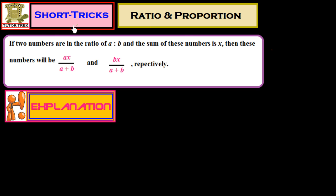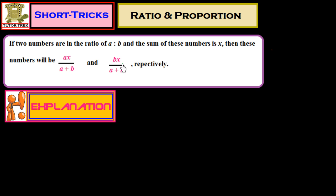Hi friends, in this session of short tricks we study about the short tricks of ratio and proportion. The first short trick: if two numbers are in ratio of a to b and the sum of these numbers is x, then these numbers will be ax over (a+b) and bx over (a+b) respectively.